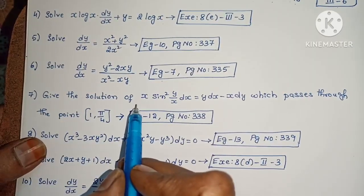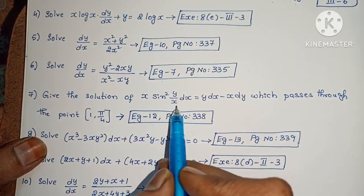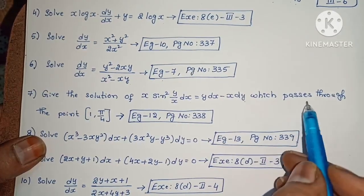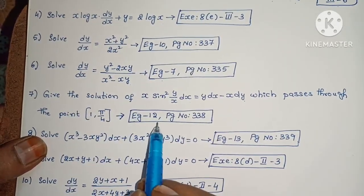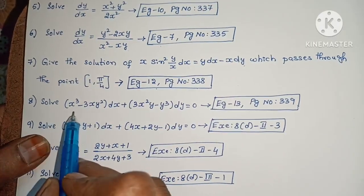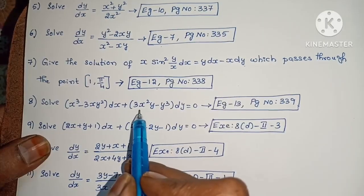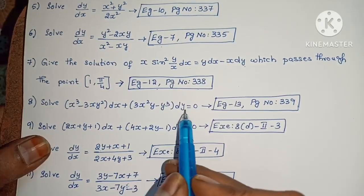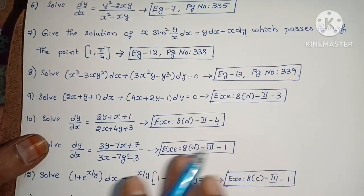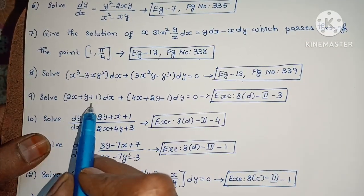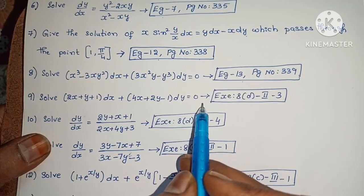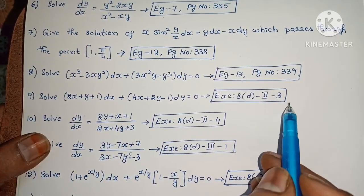Next, give the solution of x·sin²(y/x)·dx equals y·dx minus x·dy, which passes through the point (1, π/4). Example 12, page number 338. Next, solve (x³ minus 3xy²)·dx plus (3x²y minus y³)·dy equals 0. Example 13, page number 339. Next, solve (2x plus y plus 1)·dx plus (4x plus 2y minus 1)·dy equals 0.